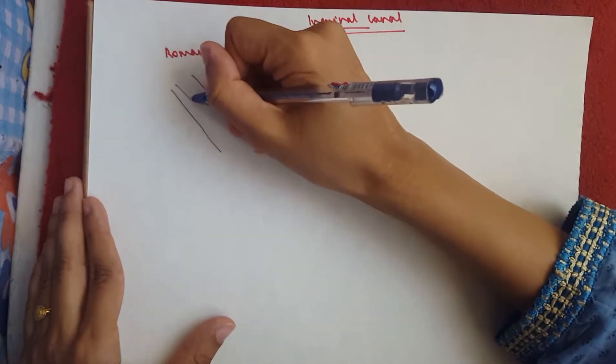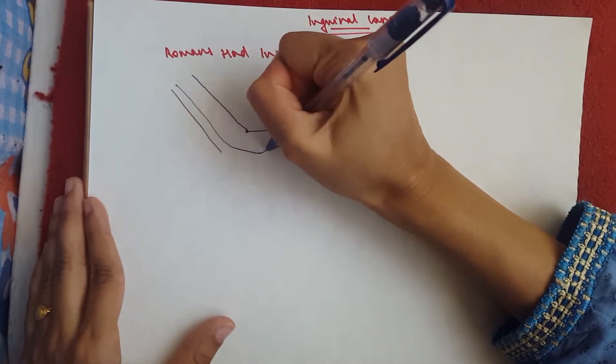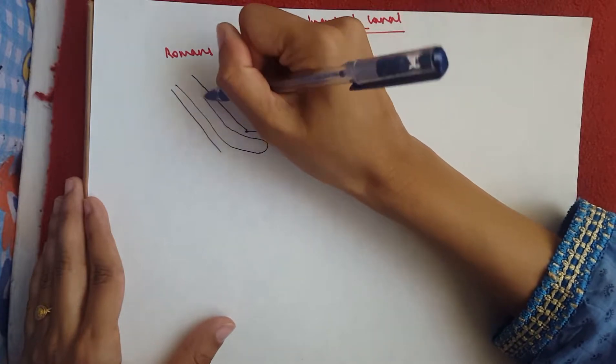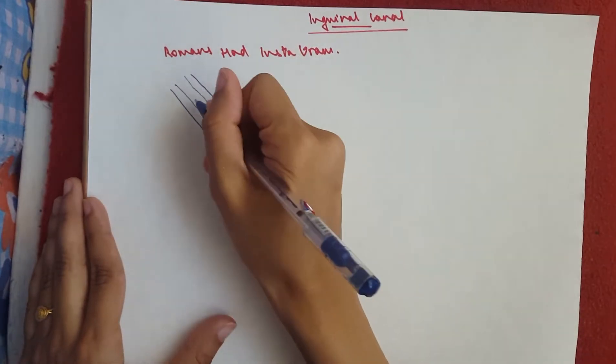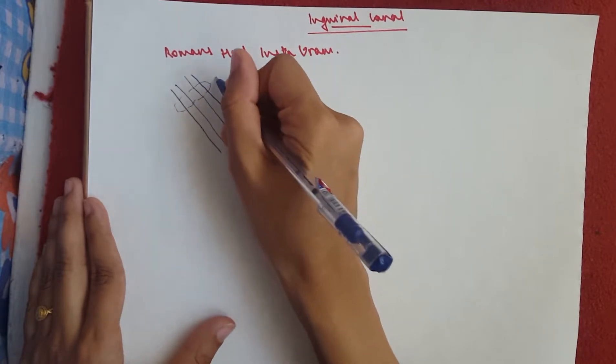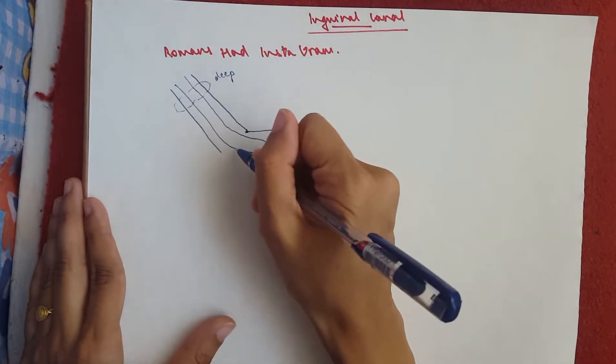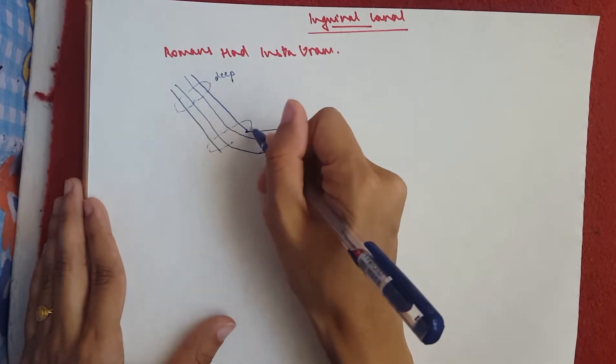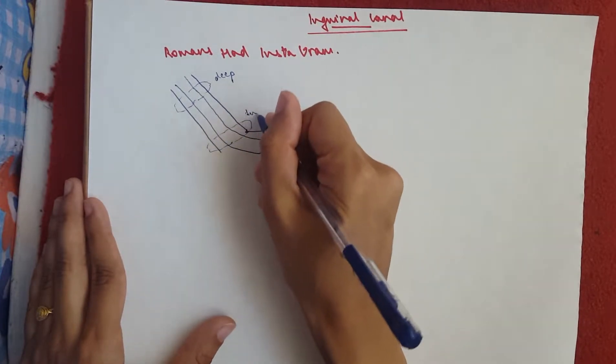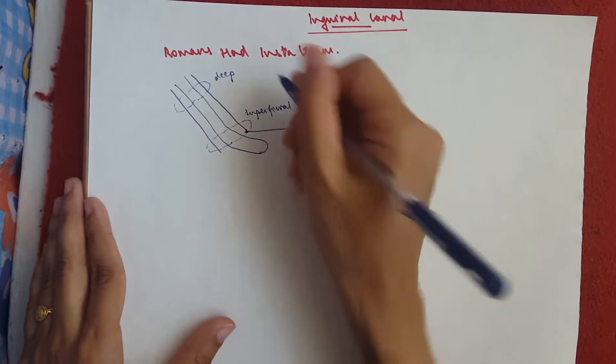So that would be our inguinal canal. So this bit here would be our deep inguinal ring. It's like a slit in the peritoneum. And here would be our superficial inguinal ring.